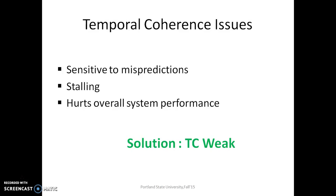TC weak provides two main benefits. First, it eliminates expensive stalling at the shared L2 cache controllers. Second, it enforces cache coherence only when required and specified by the program.